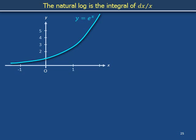The natural logarithm is the integral of 1 over x dx. On this plot of e to the x versus x, consider the location x equals x2.